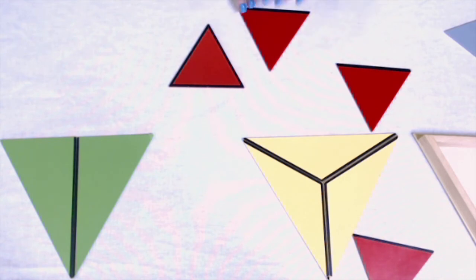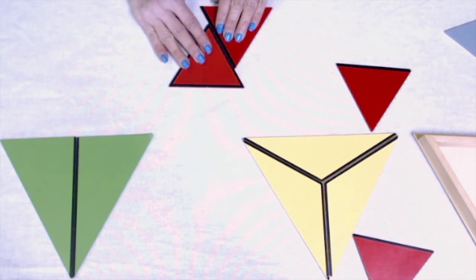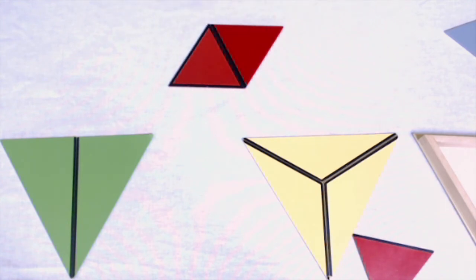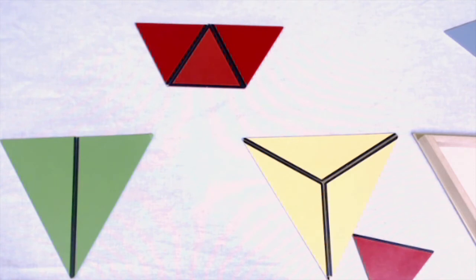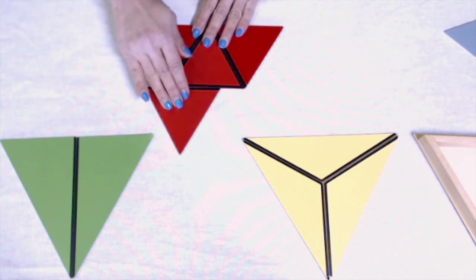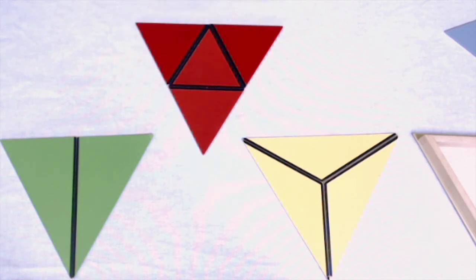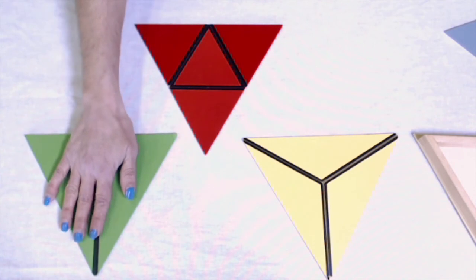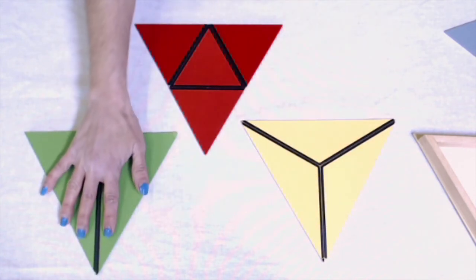I want to match my black lines. I've made a rhombus. And now I've made a trapezoid. I have one more triangle. All the black lines are in the center of my equilateral triangles.